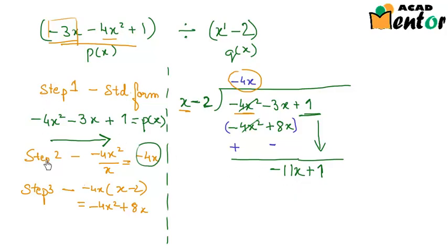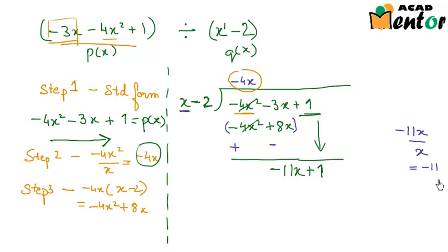We now repeat the same three steps with minus 11x plus 1 as the new dividend. Dividing the first term minus 11x by the first term of the divisor x gives minus 11, which becomes the second term of the quotient. So the quotient so far is minus 4x minus 11. This term minus 11 is then multiplied by the complete divisor x minus 2.